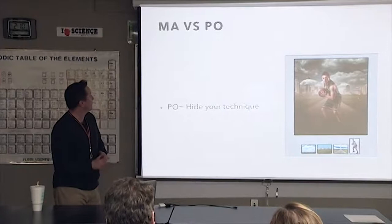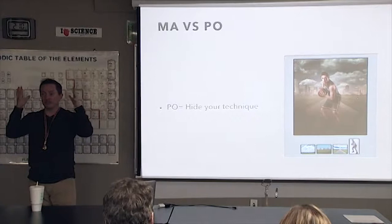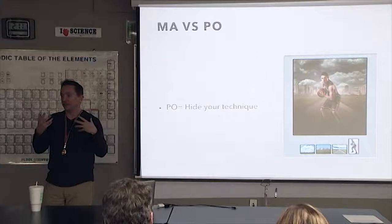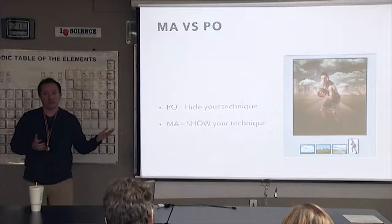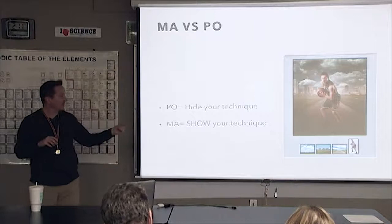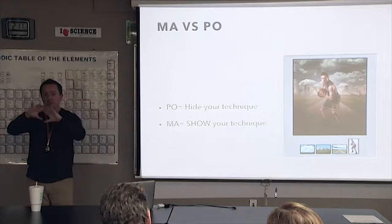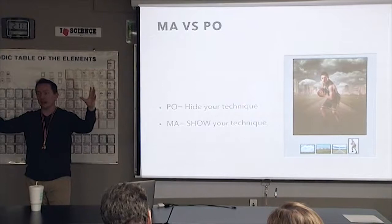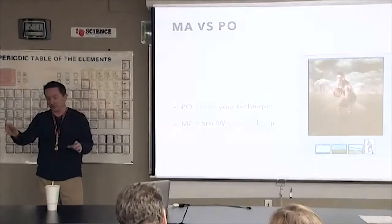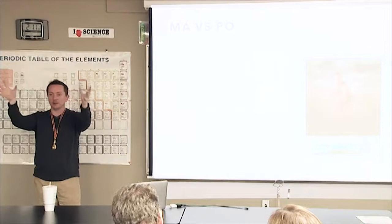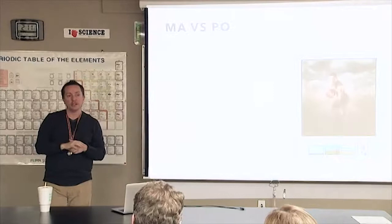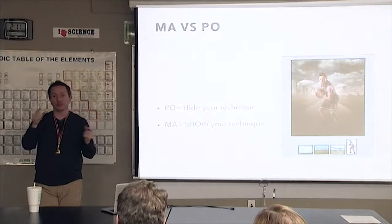A big difference: in PO, you're trying to hide your technique. You want them to see only the final image and wonder, 'how did they get there?' In the artist category, you want to show your technique — 'look, I took all these pieces and built this.' In PO, when a beautiful landscape comes through with sweeping fields and dramatic clouds, judges immediately scan the horizon line looking for telltale signs of compositing — where things don't match up, where the light doesn't match.